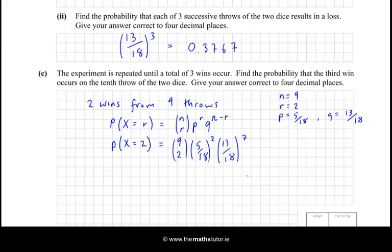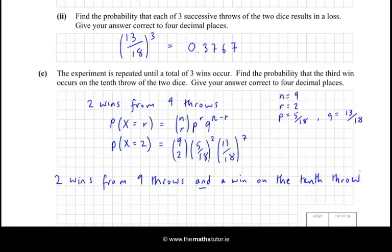And then, to include 2 wins from 9 throws, I'm going to use the word AND. A win on the tenth throw. And when you have AND, you always multiply. So that would be 9 choose 2 times 5 over 18 squared times 13 over 18 to the 7, multiplied by another 5 over 18, because of the win on the tenth throw.